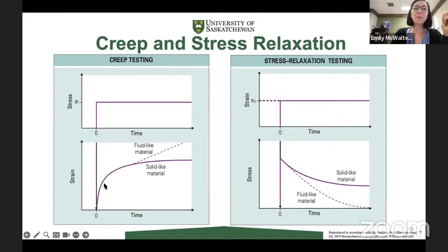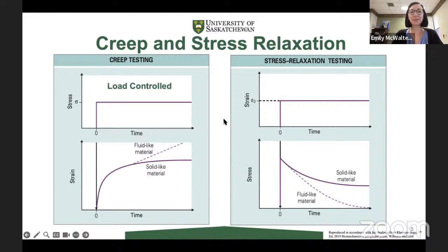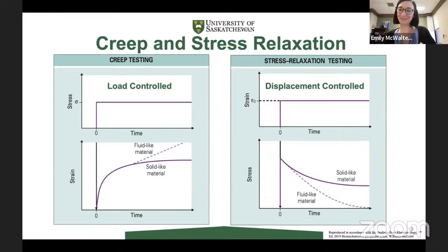We could apply a constant displacement to our tissue — that's stress relaxation. Or if we look at creep testing, applying a constant load or stress, we can reach equilibrium a bit faster than with stress relaxation. But a creep rig is more difficult to build. We generally call our creep testing rigs load-controlled, and our stress relaxation testing displacement-controlled — I'll use that terminology in the next section.